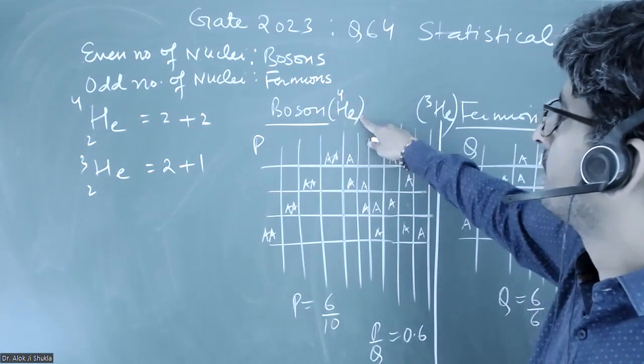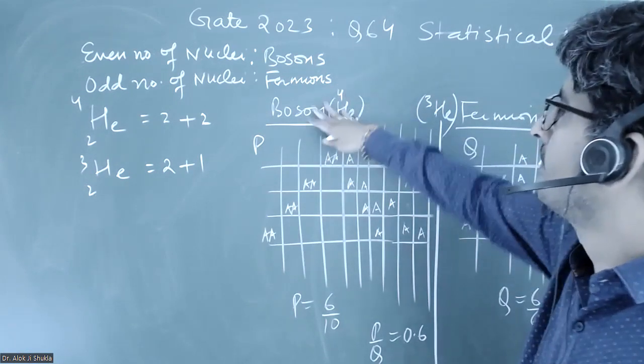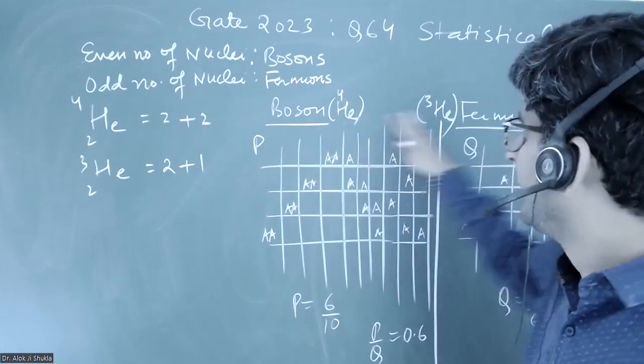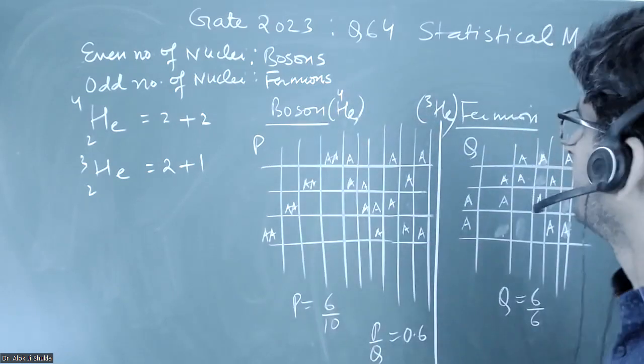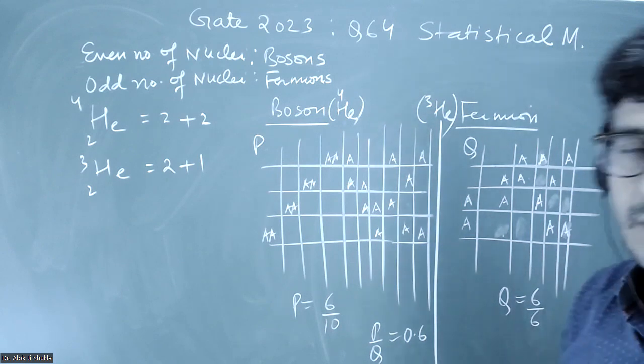And helium-3, because of the odd number of nuclei, it will be a fermion. Thank you.